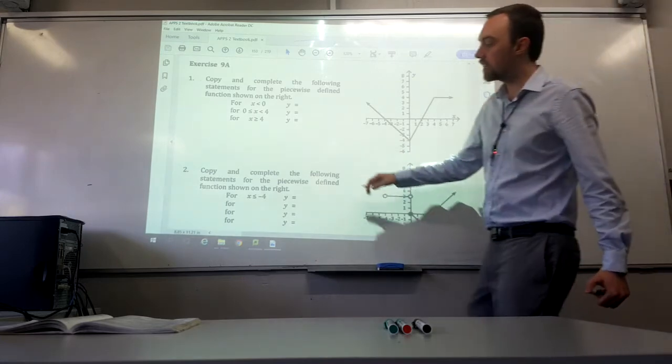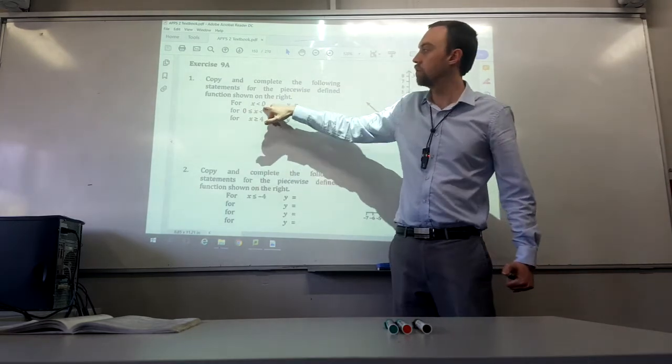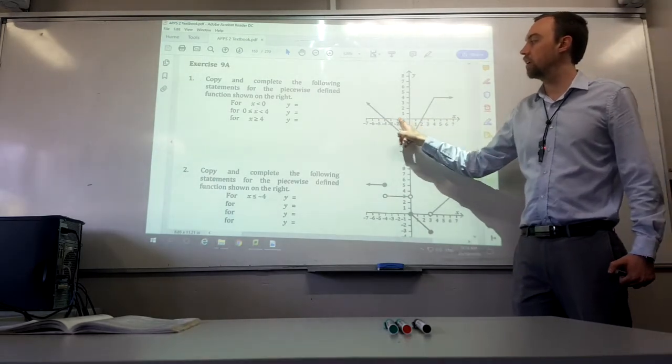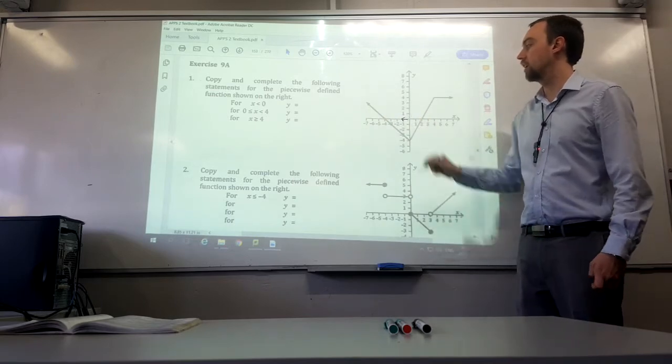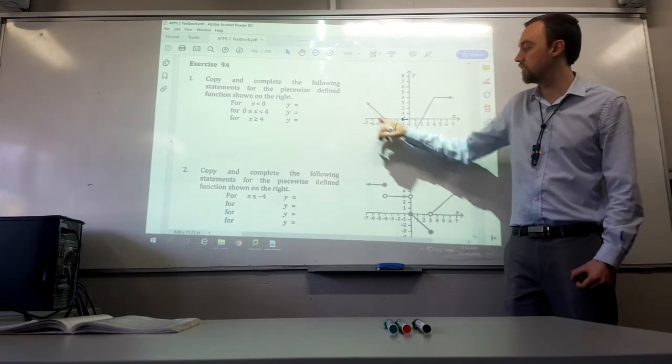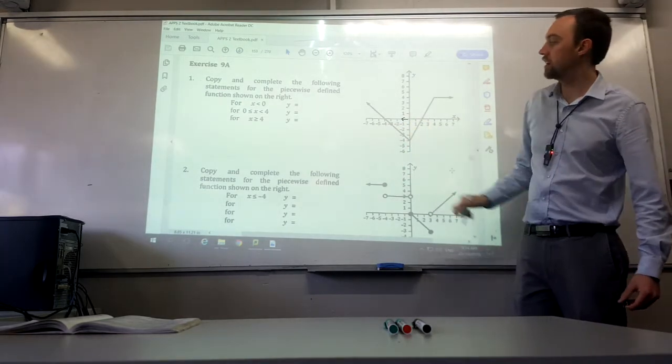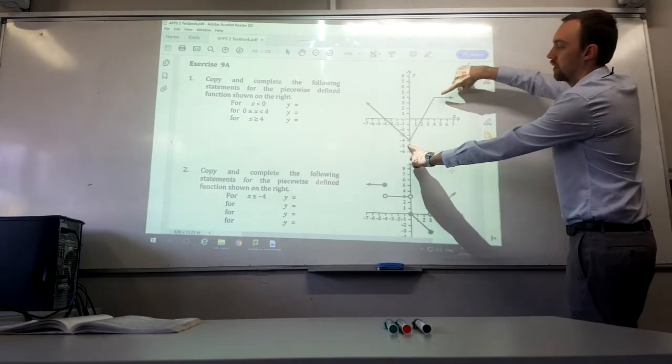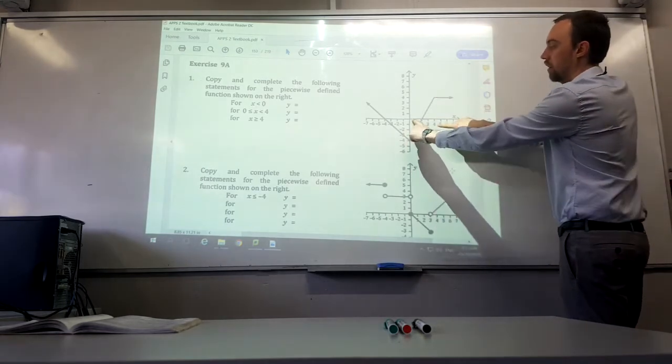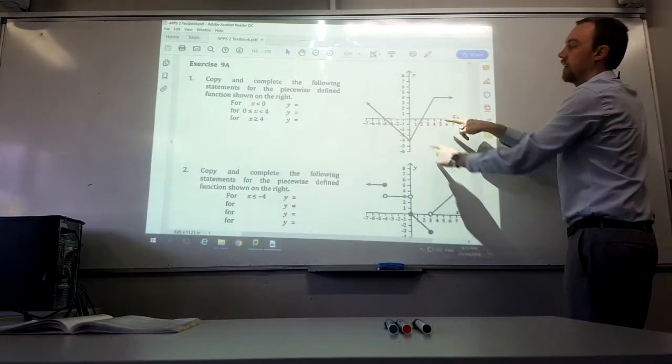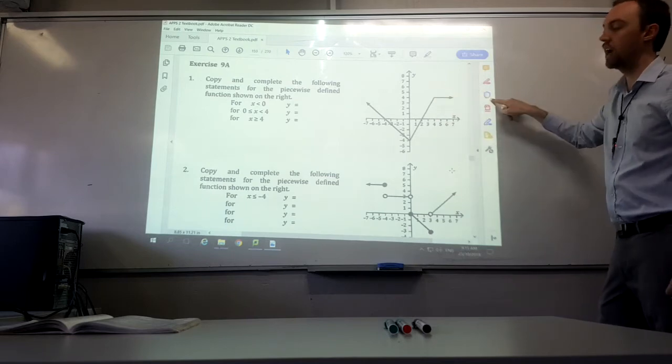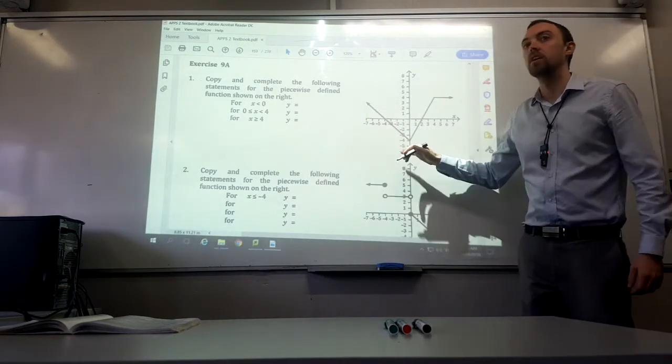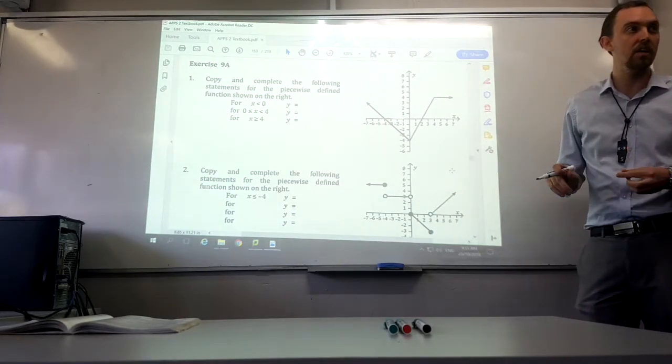I recommend you read through the beginning of the chapter for the text. It's probably going to help you understand where these graphs are coming from a bit better. But for now, let's look at the first couple of questions from our text. So now we're on to chapter 9. We're going to be looking at piecewise graphs, and you start getting things that look pretty funky like that. Copy and complete the following statements for the piecewise defined function shown on the right.